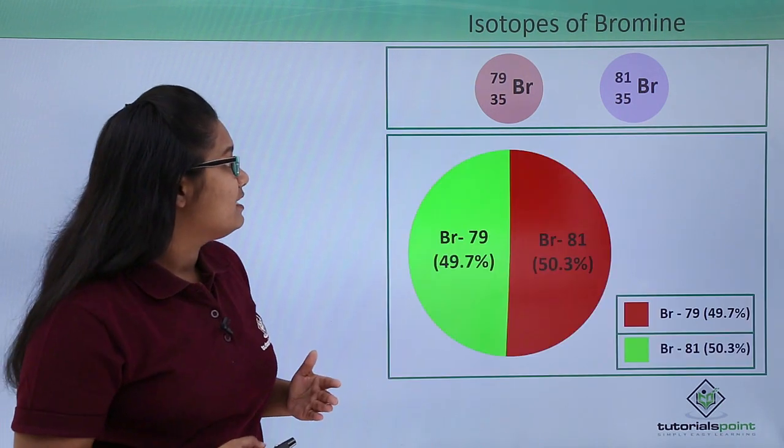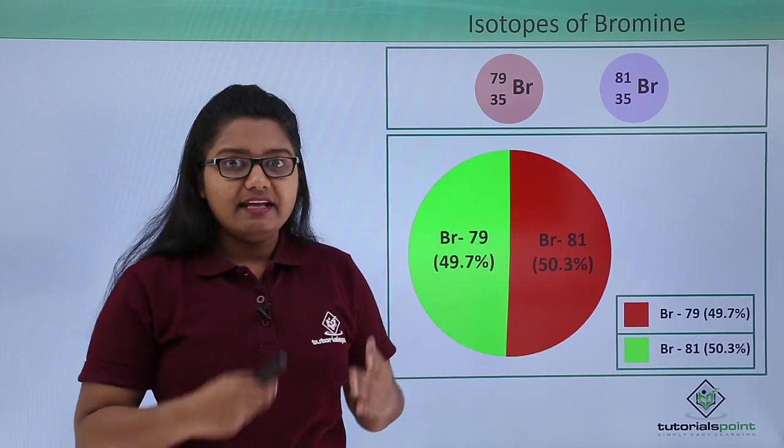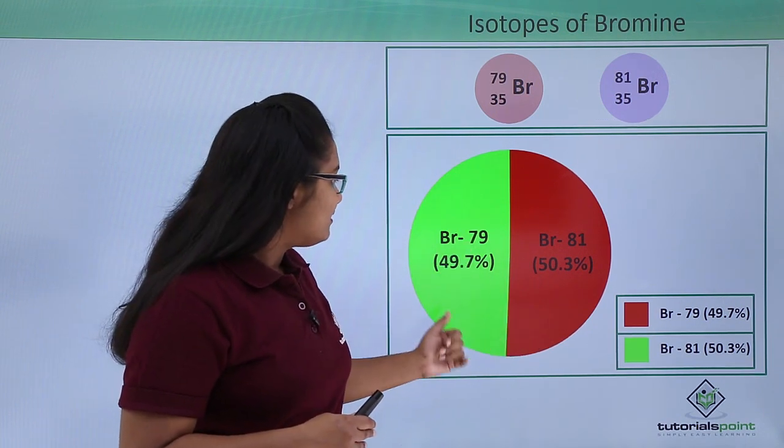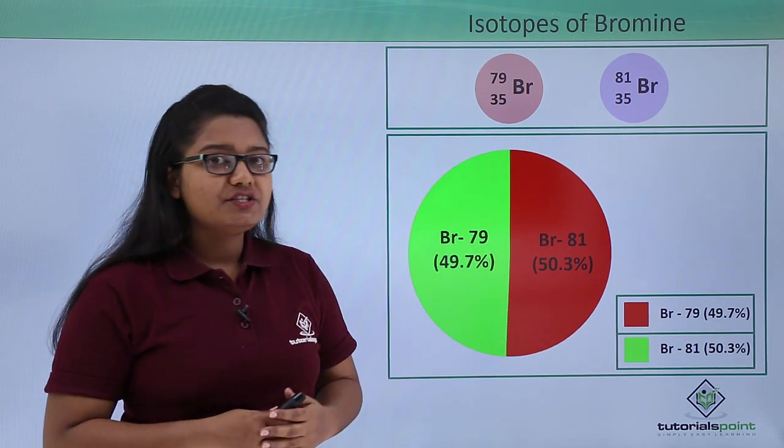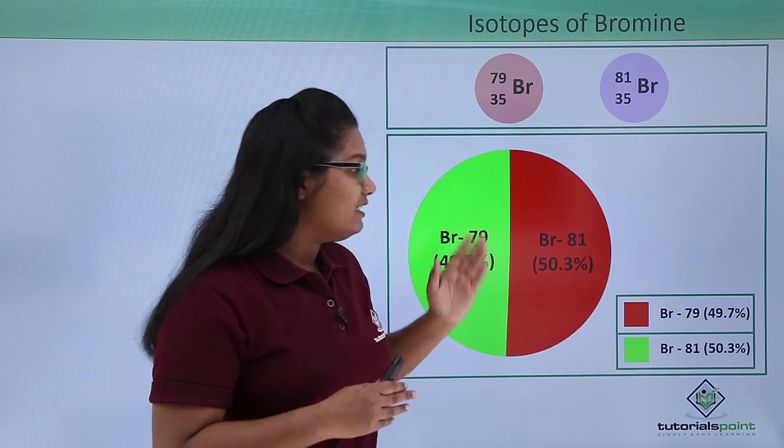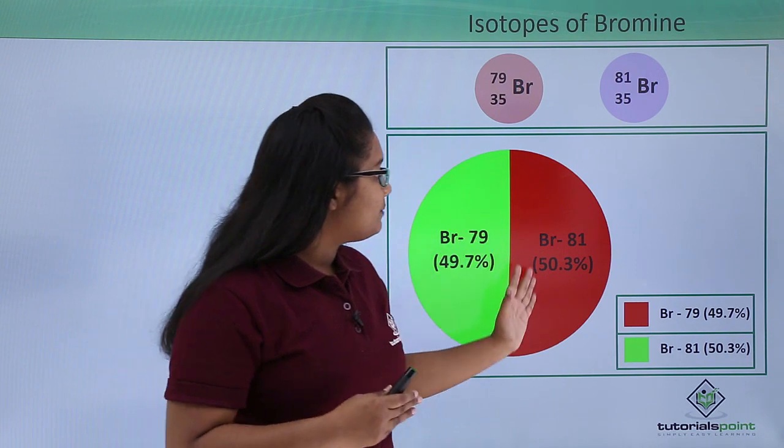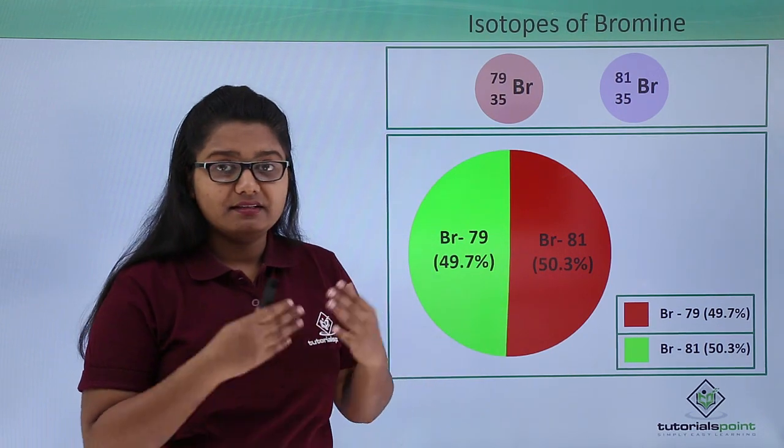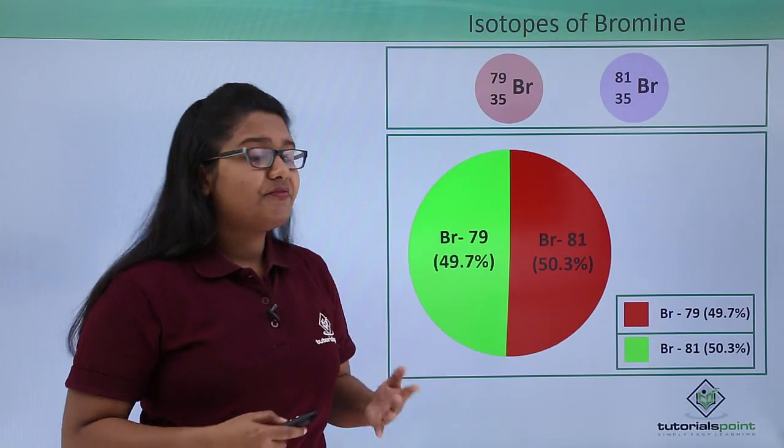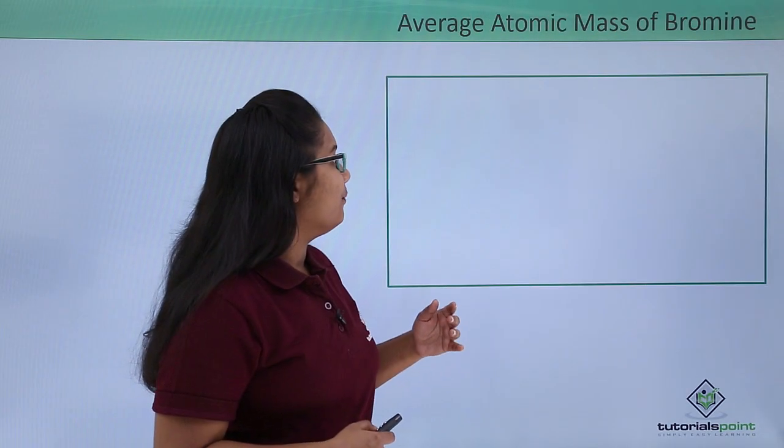These two isotopes are available in nature in this abundance: 49.7 percent of bromine atoms in this world is bromine-79 and the rest of the 50.3 percent is bromine-81. So now let us find the average atomic mass of bromine.